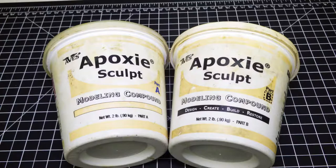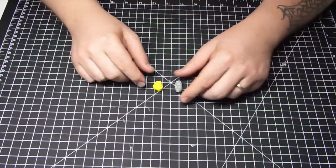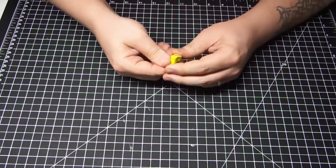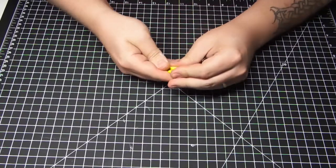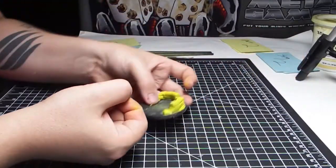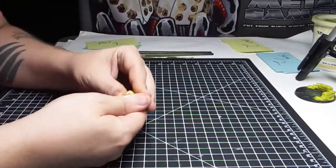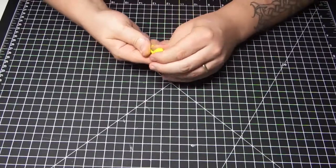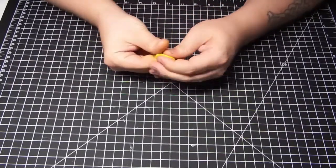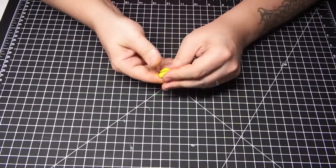There's another version called magic sculpt. Basically, it's a two-part modeling compound not unlike green stuff. You mix the parts equally just like you do with green stuff, but this stuff dries to a rock hard finish. For long-term projects like this, I really like to do something a little bit harder. Green stuff is actually a lot more expensive too, so you're getting way more volume for your money, and it'll last much longer.